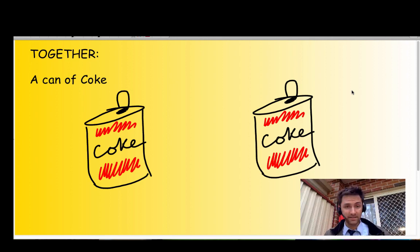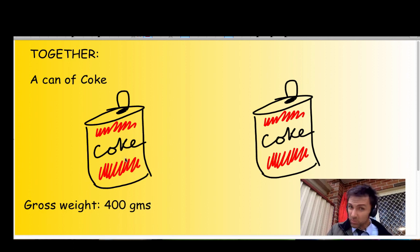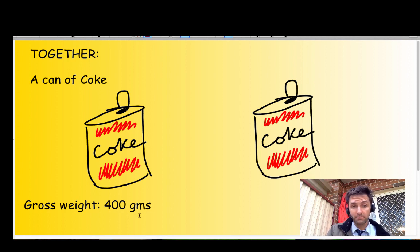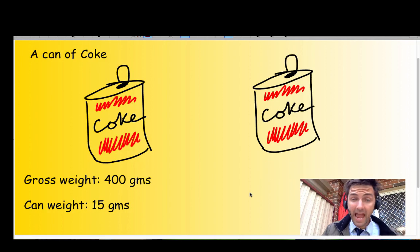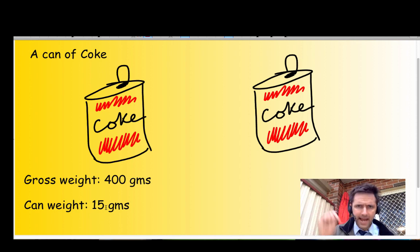Here are two cans of Coke — the can on the left is exactly the same as the can on the right. The gross weight of this can of Coke is 400 grams; that is the weight of the can and the Coke within it. The can itself weighs 15 grams. So if the gross weight is 400 grams and the weight of the can is 15 grams, can you work out the net weight?